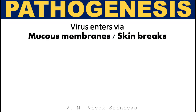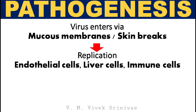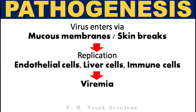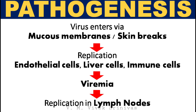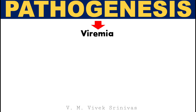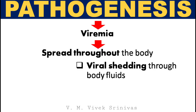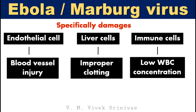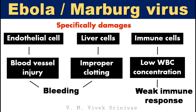Pathogenesis: following entry of the virus through mucous membranes or skin breaks, the virus does its initial replication in endothelial cells, liver cells, and immune cells like monocytes, macrophages, and dendritic cells. This is followed by viremia, and next replication occurs at the lymph nodes. Following secondary replication, the virus gets distributed through secondary viremia with subsequent viral shedding through body fluids. This virus specifically damages endothelial cells, liver cells, and immune cells, which leads to blood vessel injury, improper clotting, and decreased WBC concentration respectively, causing internal and external bleeding and a weak immune response.